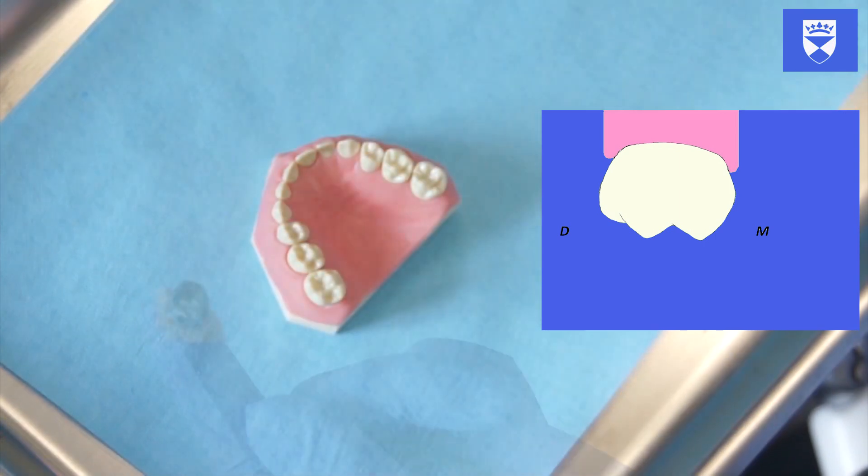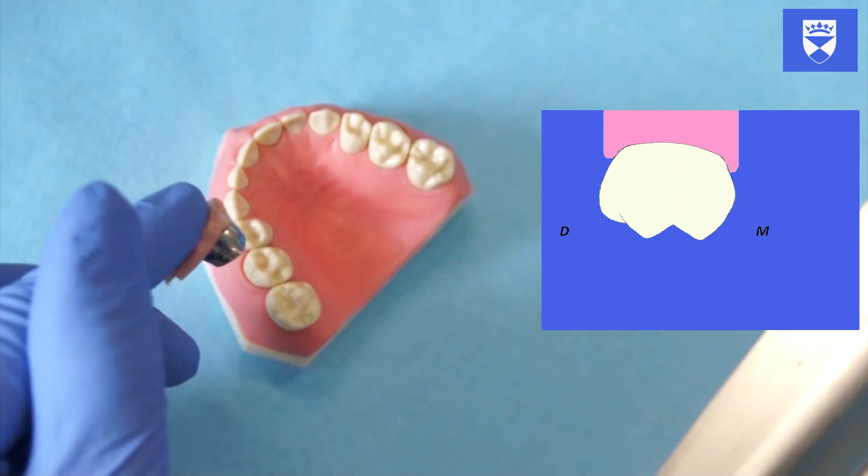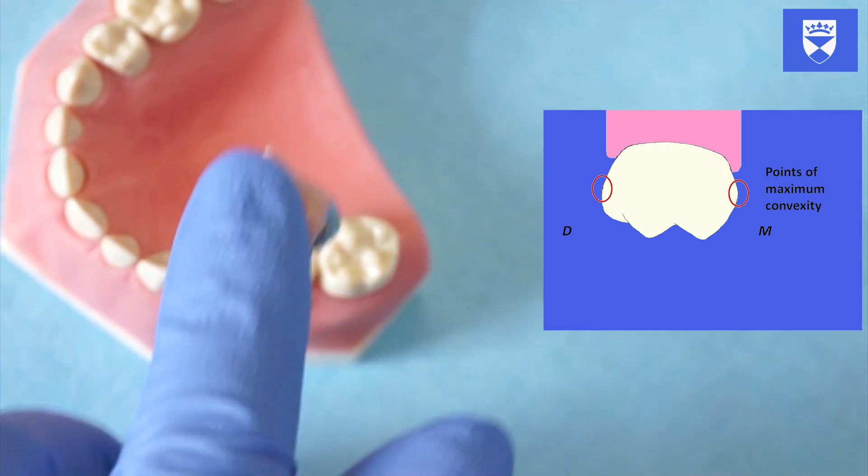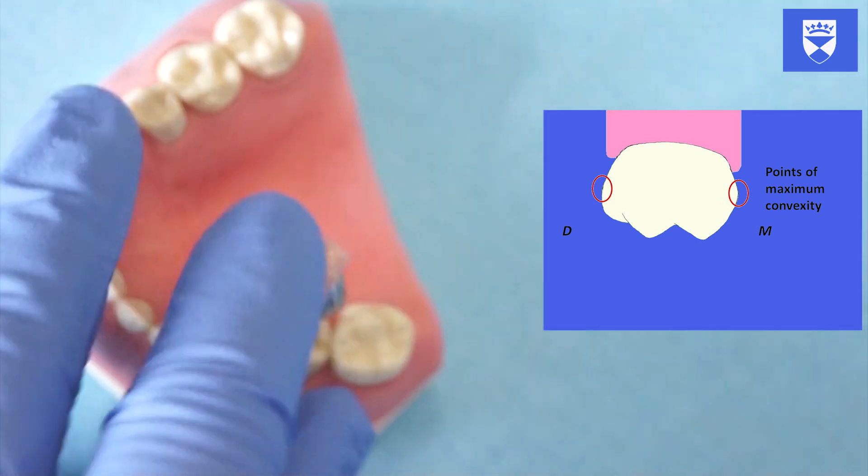Try the crown over the tooth. Ensure that the crown fits over the whole occlusal table but does not cover either of the adjacent teeth. Carefully determine the path of insertion.